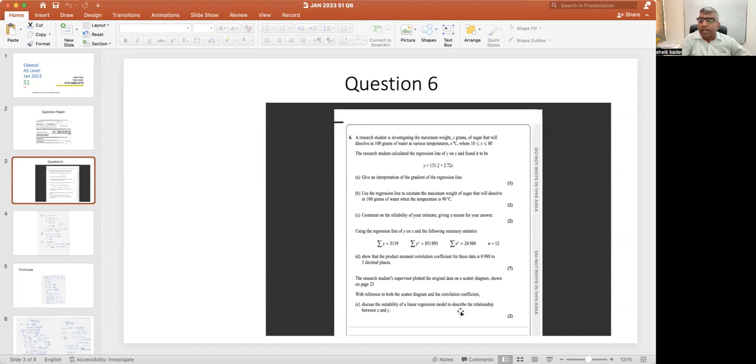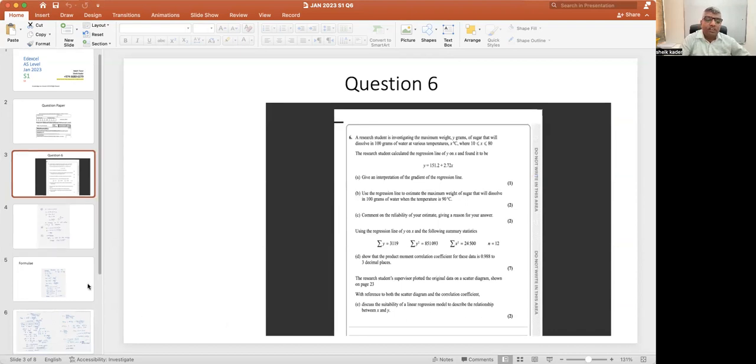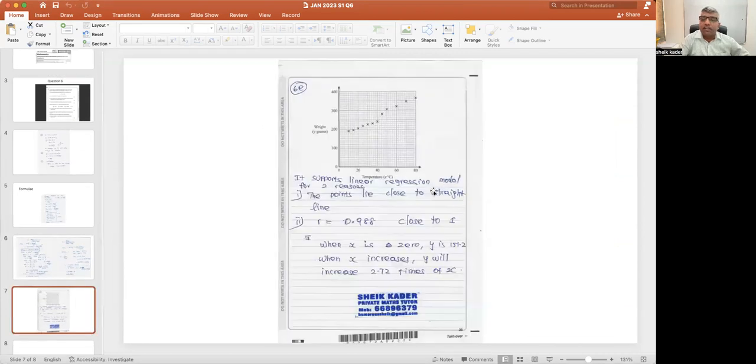Okay, we will come there. This is the graph they have given. You can see all these dotted lines are closer to one straight line, so it supports linear regression model. It supports linear regression model for two reasons: the points lie close to the straight line.